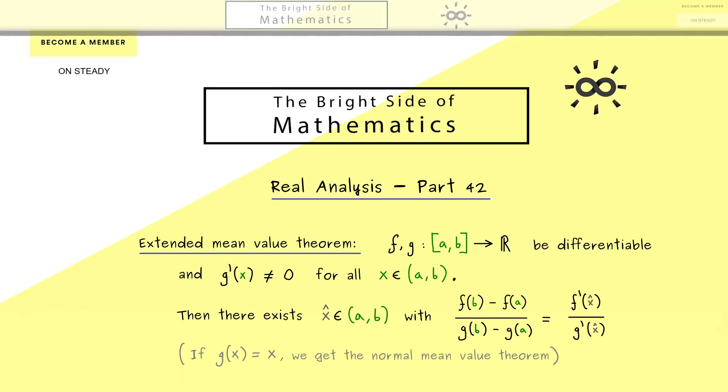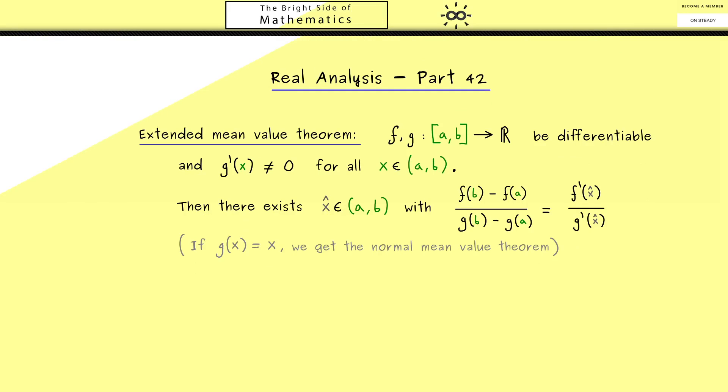Ok then I think we are able to prove the extended mean value theorem. This should not be a problem at all because we can use the same ideas as in the last video. Namely we will use Rolle's theorem again which was already very close to the mean value theorem. And in order to do that we define a new function we call h.